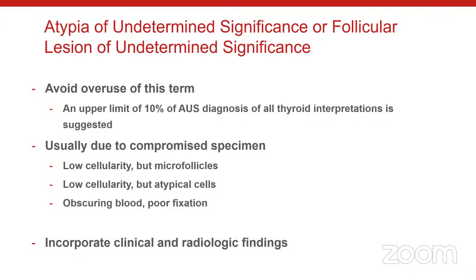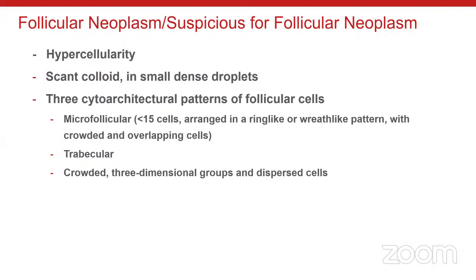AUS rate is partly within our control but often truly reflects specimen quality. Every time I diagnose AUS, I review the radiology findings to see if the case can be placed in another category. For FN or SFN — I only use SFN, and you pick one and stick with it. The diagnosis is made mainly based on architectural features: micro-follicles where less than 15 cells form an open lumen structure, with enlarged, crowded, overlapping cells, trabecular architecture, and three-dimensional crowded clusters.